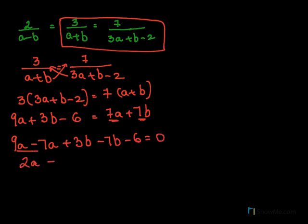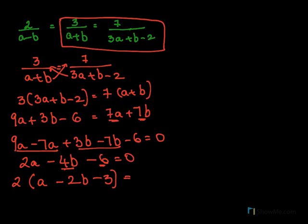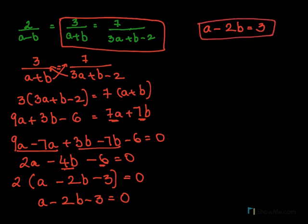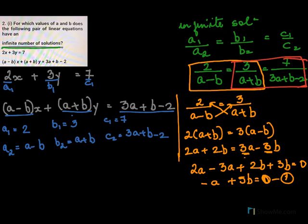So 2A, this is 2A when I put this together, I get minus 4B minus 6 equals to 0. To make this equation a little easier, I will take 2 common out. So when I take 2 common out here from 2A, A. When I take 2 common out from here, I will get minus 2B minus 3 equal to 0. So my equation is A minus 2B minus 3 equal to 0. A minus 2B equal to 3. This is my equation 2.